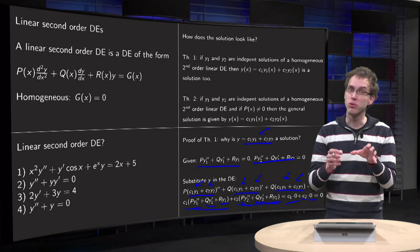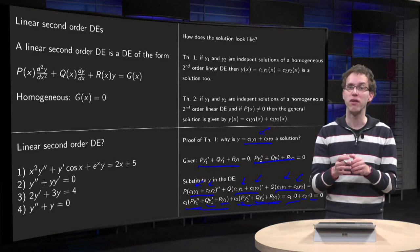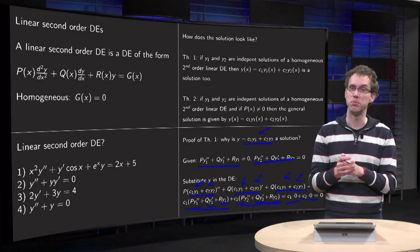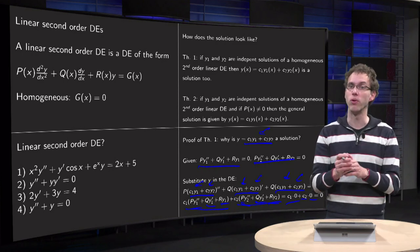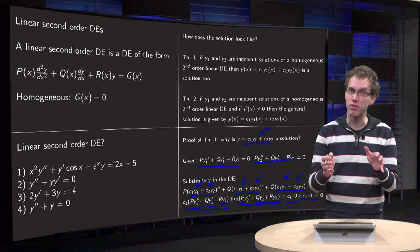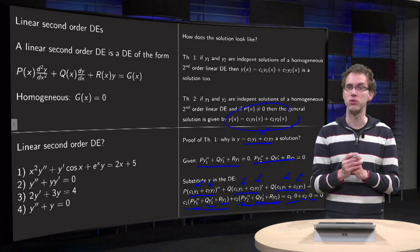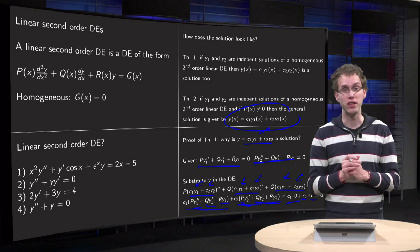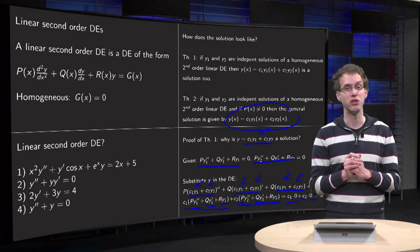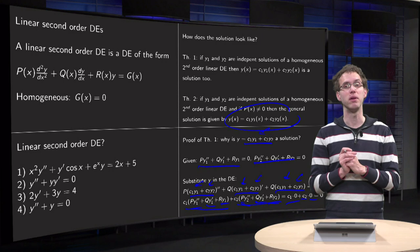That is what Theorem 1 says. And Theorem 2 — which we didn't prove, as it's a bit harder — states that if you have two independent solutions of a homogeneous second order linear differential equation, then that's all: the general solution is c₁y₁ + c₂y₂. So if you are trying to solve a linear second order differential equation, you are in fact looking for two independent solutions.